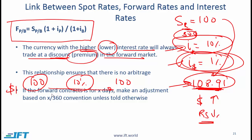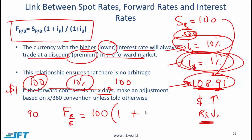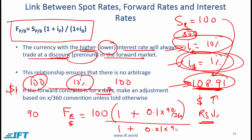A subtle point: if the forward contract is for x days — say 90 days — we make an adjustment based on 90 over 360. For a 90-day forward contract the formula becomes: spot rate of 100 multiplied by (1 plus 0.1 × 90/360) divided by (1 plus 0.01 × 90/360). We are using 90 over 360 to de-annualize these interest rates.